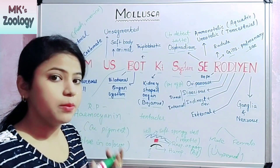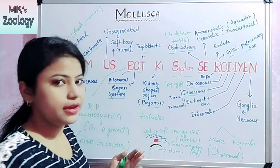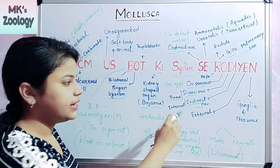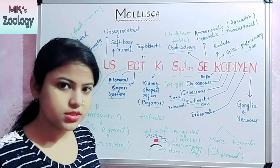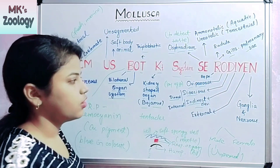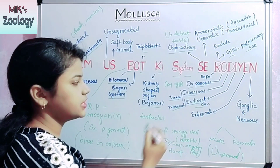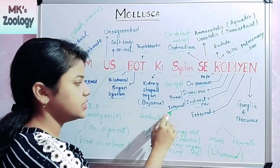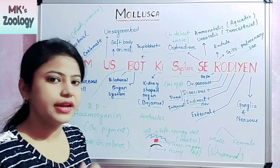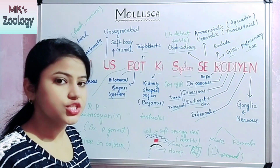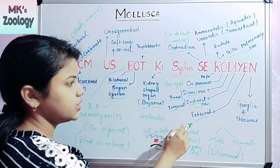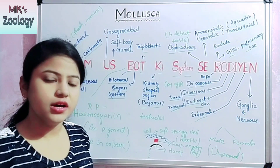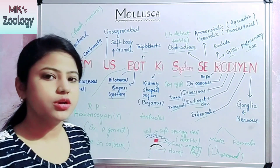D means the development is also direct. And I means the development is also indirect, meaning there are subsequent larval stages in indirect development. I also stands for internal — the fertilization is also internal, meaning fertilization happens inside the body. E means external fertilization also happens, where fertilization occurs outside the body. And finally, the nervous system has ganglia and nerves present in their body.